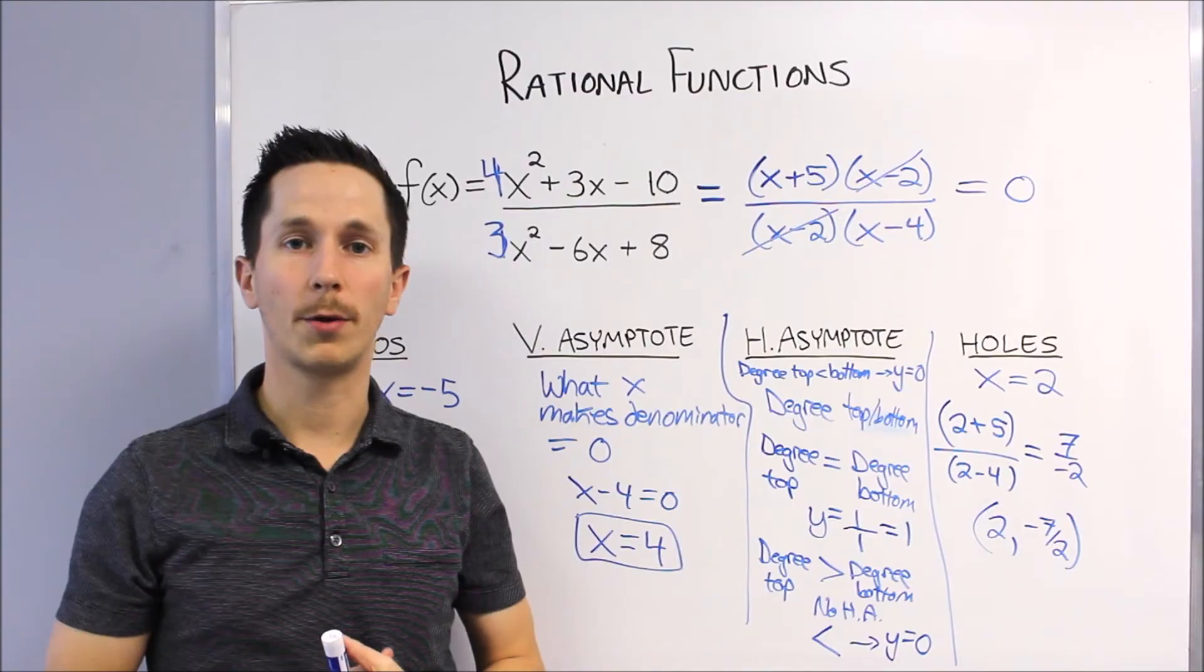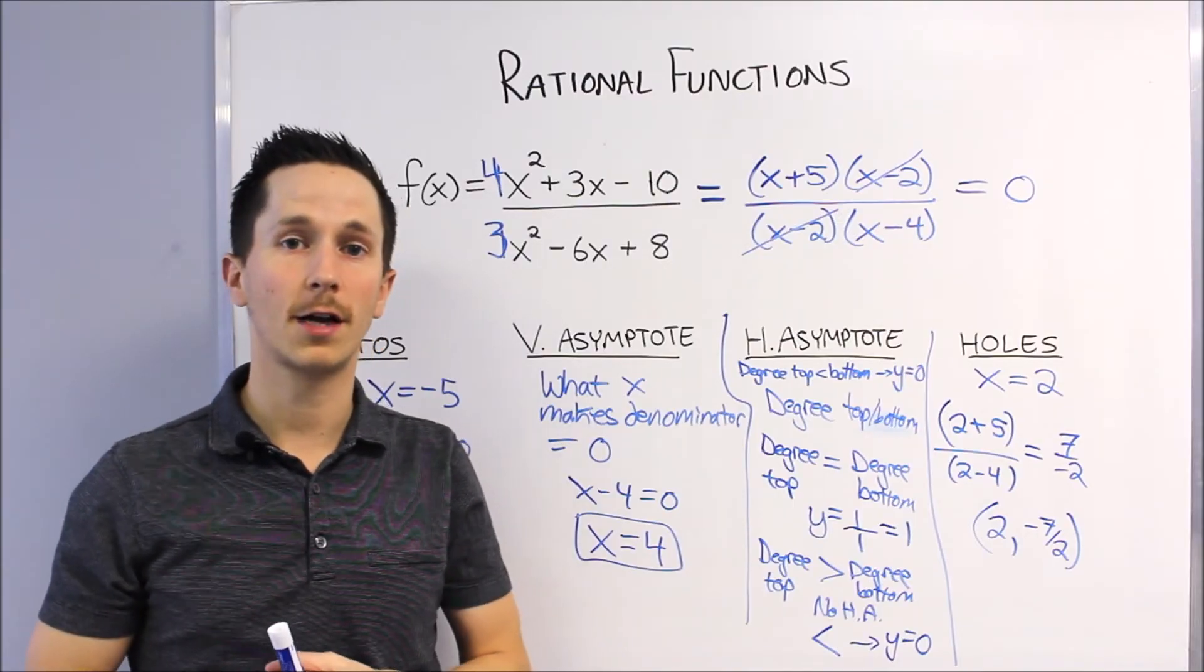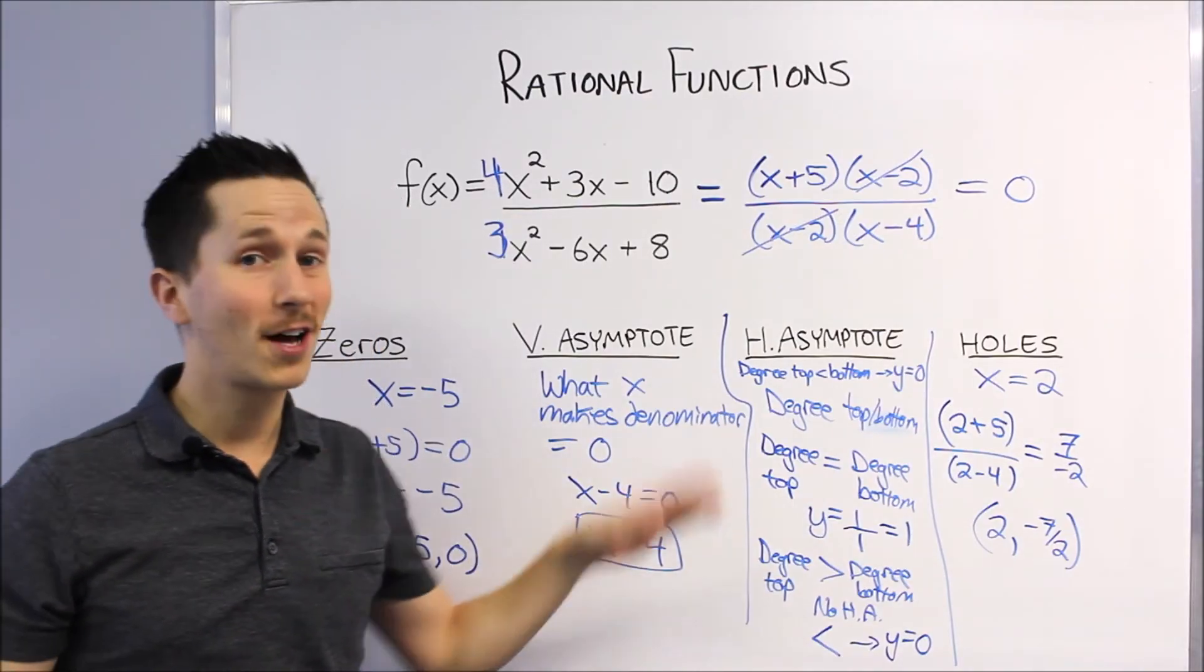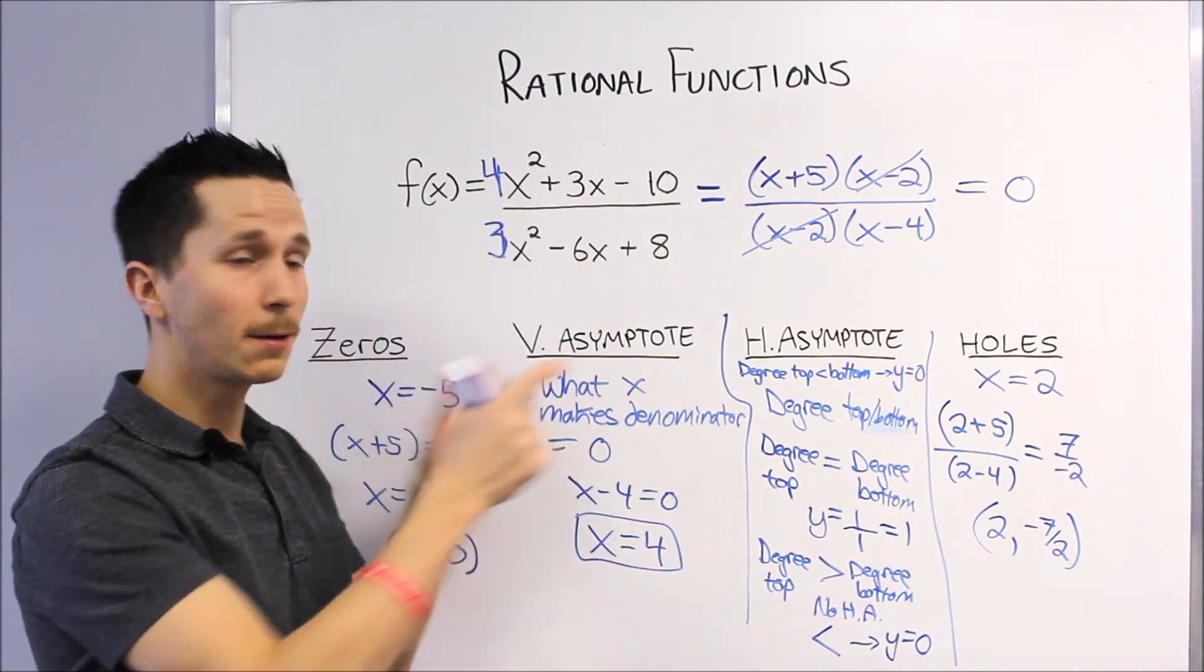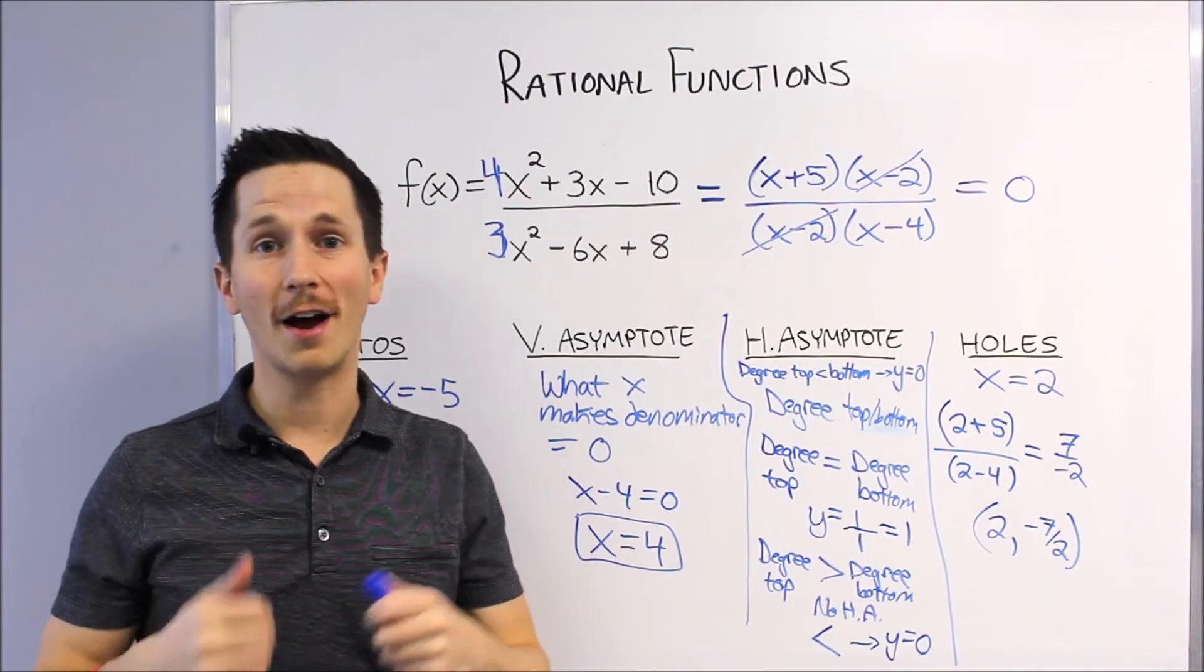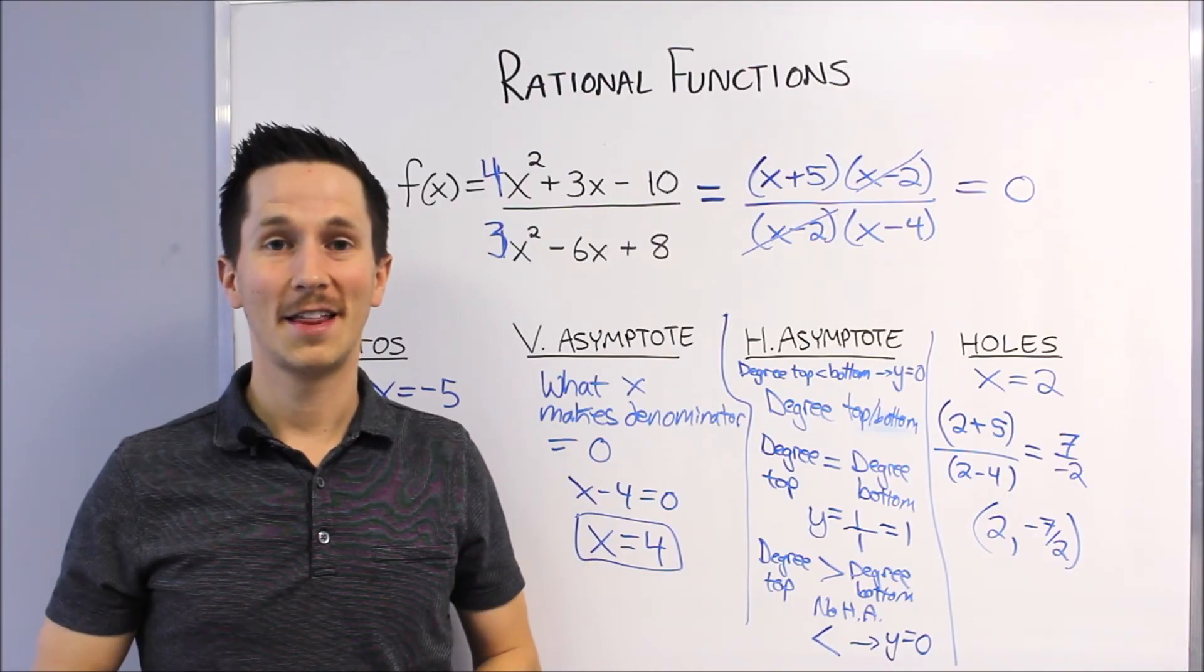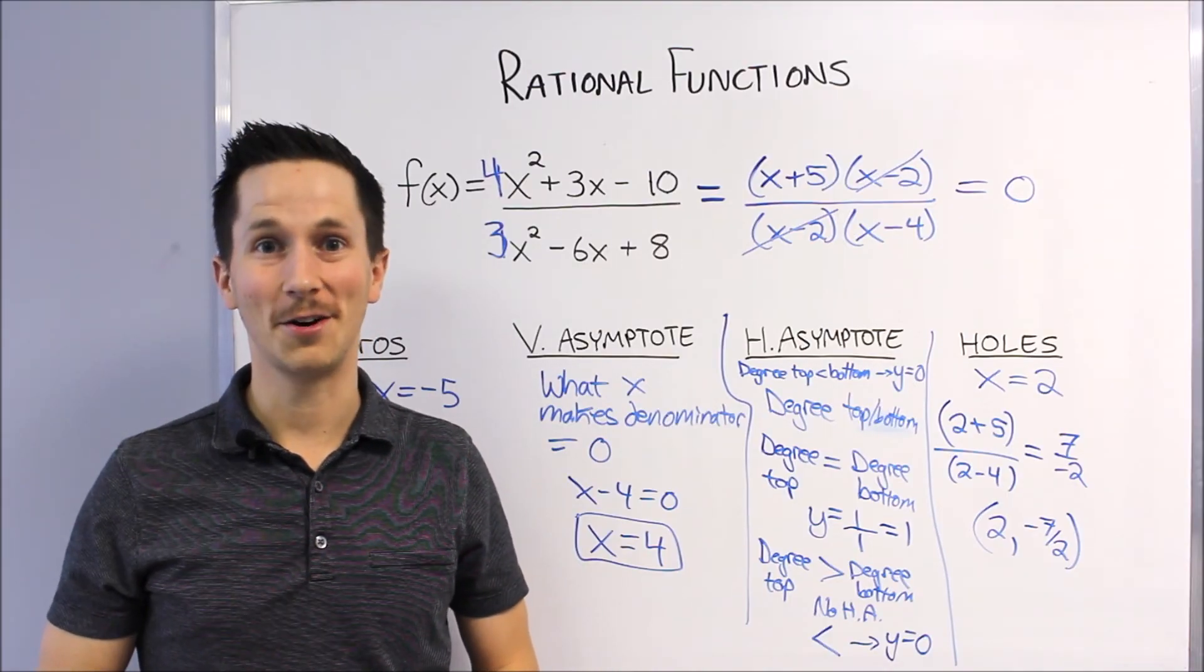So depending on the degrees of the polynomial on top versus the degree of the polynomial on the bottom, you can easily find out your horizontal asymptote. Vertical asymptotes really easy too. And once we have those asymptotes there, plug in a few points, it's quite clear how these things graph, and we'll look at that in the next video. Thanks so much and we'll see you in the next video.